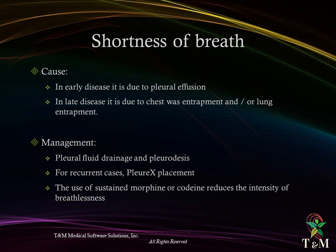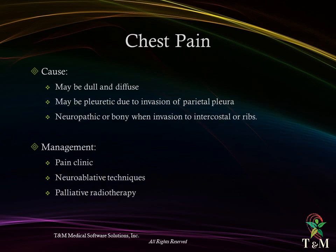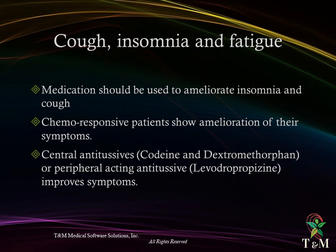Sustained-release morphine or codeine may be used to reduce the intensity of breathlessness. Chest pain may be dull and diffuse, pleuritic due to invasion of parietal pleura, neuropathic, or bony when invasion of intercostal nerves or ribs occurs. Referral to a pain clinic for medical or neuroablative techniques may be requested; palliative radiotherapy may also be indicated. For cough, insomnia, and fatigue, medications should be used to ameliorate symptoms. Central antitussives such as codeine and dextromethorphan, or peripheral-acting antitussives such as levodropropizine, can be used to improve symptoms.